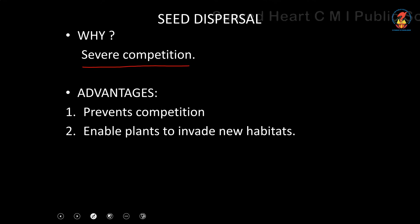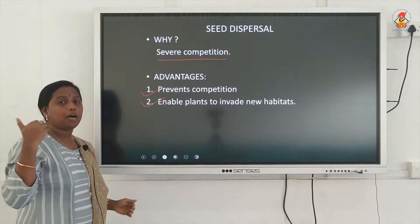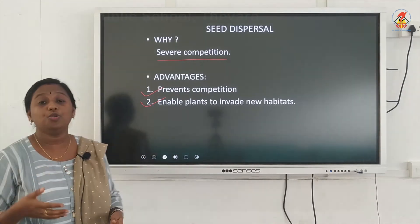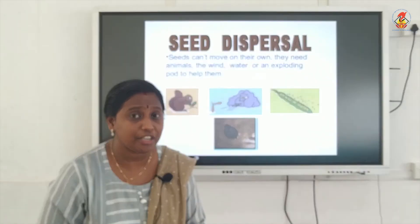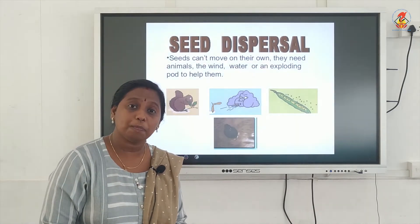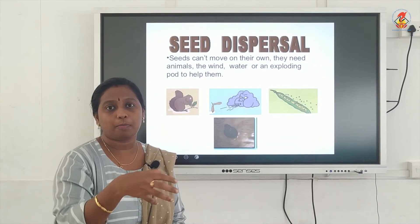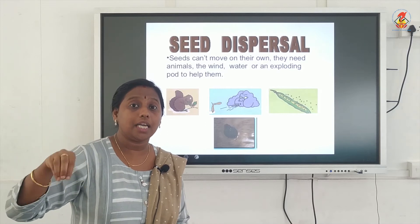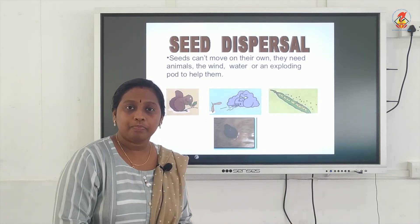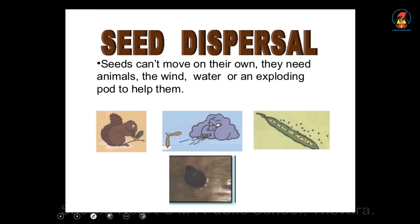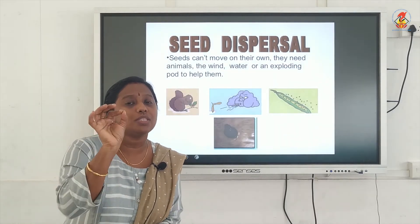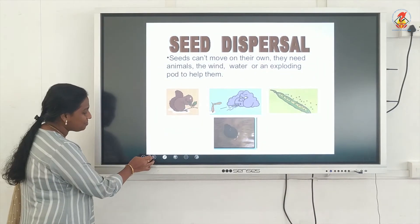The advantages of seed dispersal are: number one, it will prevent competition between the small plants; and number two, it will enable the tiny plants to invade new areas and grow there. Now just as there were different agents for pollination, similarly there are several agents for seed dispersal. Seed dispersal can occur by wind, by water, and by animals — these are called the agents of seed dispersal. We will see each one with examples.